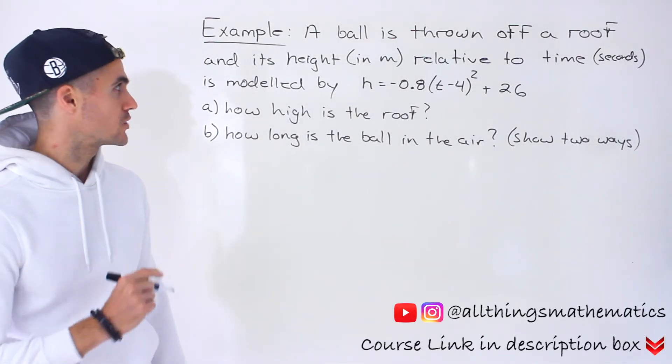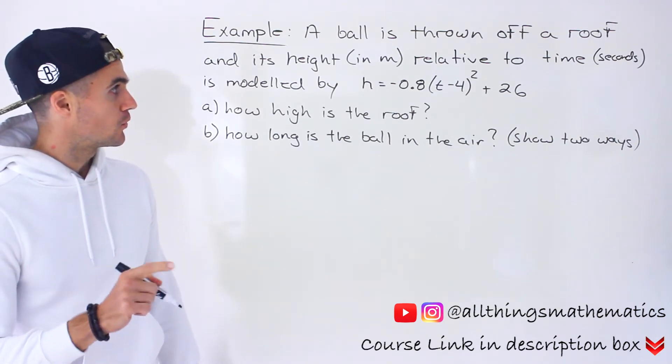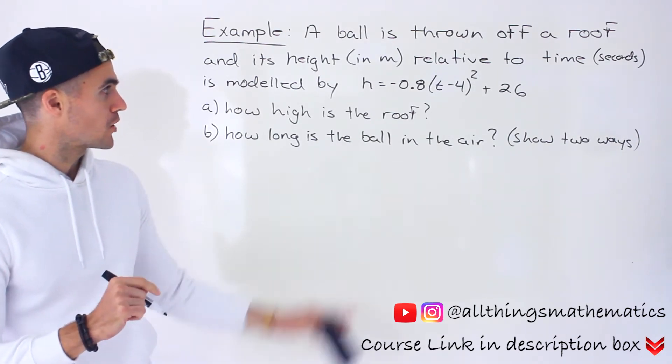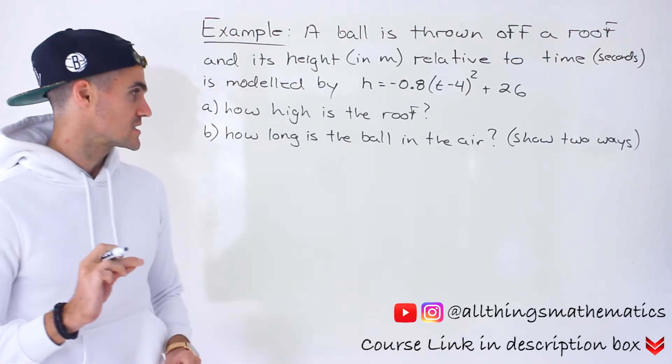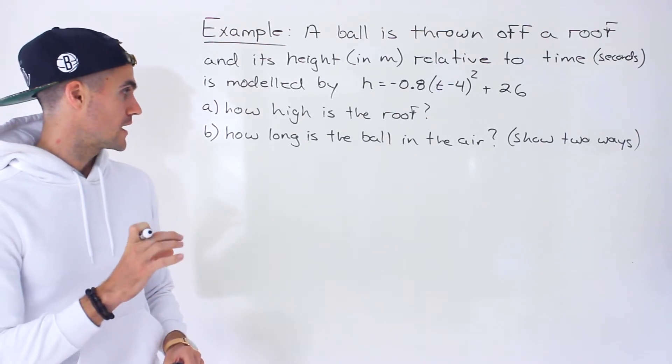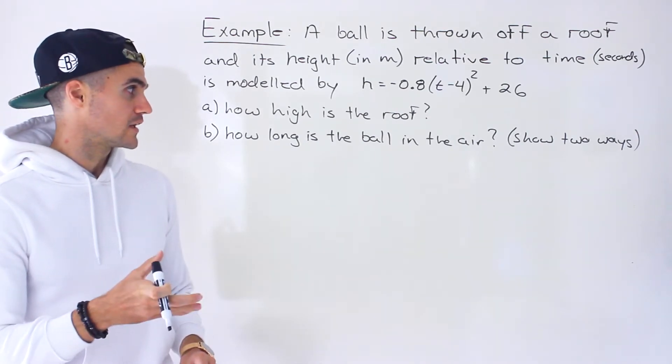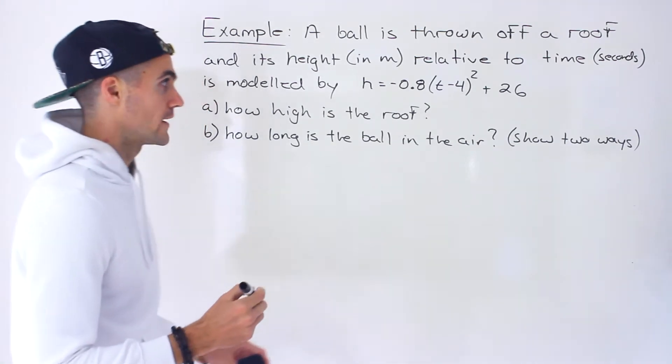Moving on to another question dealing with quadratics. So we're told a ball is thrown off a roof and its height in meters relative to time in seconds is modeled by h equals negative 0.8(t-4)² plus 26. We have two questions: how high is the roof and then part b, how long is the ball in the air? For part b we have to solve it in two different ways.